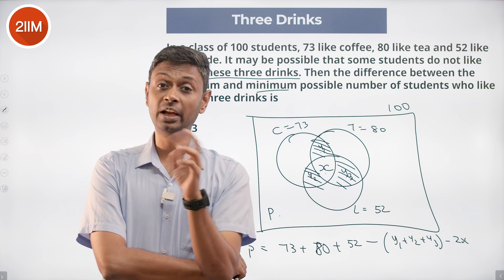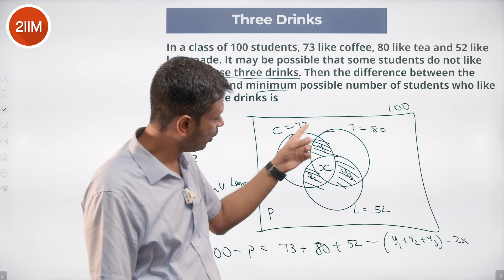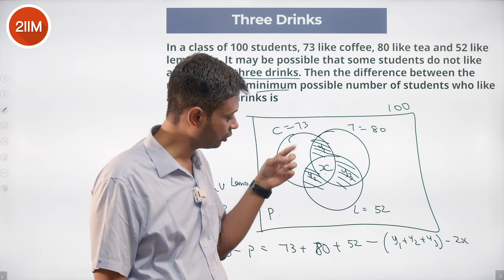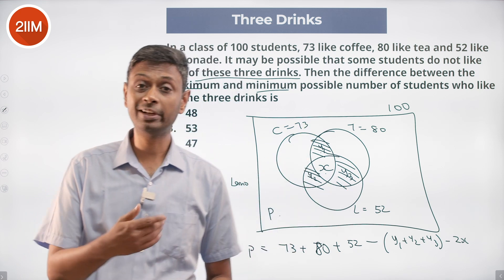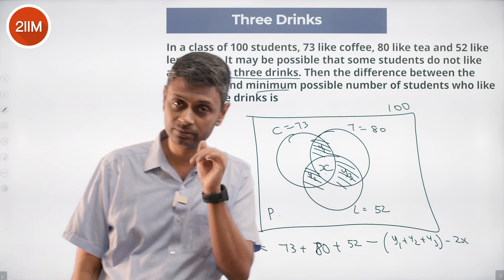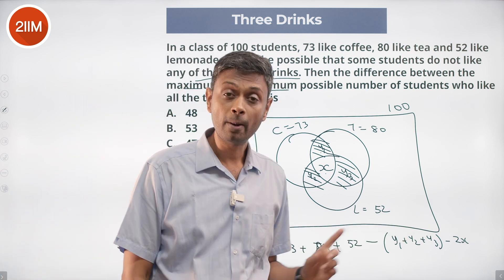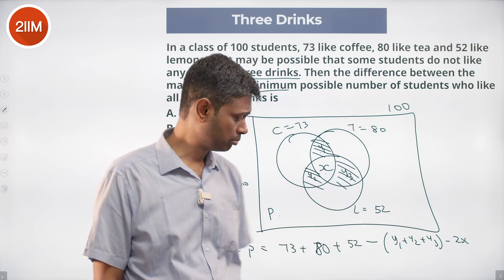We do minus A intersection B, minus B intersection C, minus A intersection C, plus A intersection B intersection C. We do minus of y1 plus x, minus of y2 plus x, minus of y3 plus x. X completely disappears. We add x back. Instead of that we can say minus of y1 plus y2 plus y3 minus 2x. Nice, brilliant.